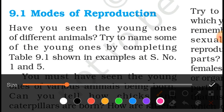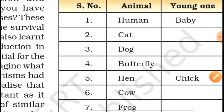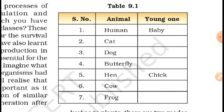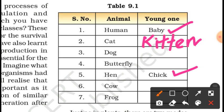Before we begin, have you seen the young ones of different animals? Try to name some of the young ones by completing Table 9.1 — two examples are solved: number one is human, whose young one is a baby, and number five is hen, whose young one is a chick. For example, the young one of a cat is called a kitten, and the young one of a dog is called a puppy.